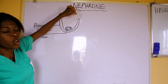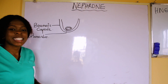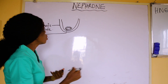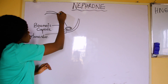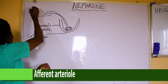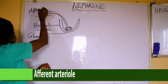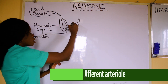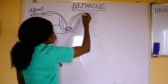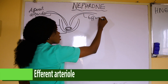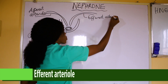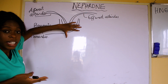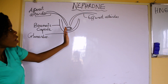Something is always coming in and going out of the nephron, and that is the arterioles. There are two types of arterioles. We have the afferent arteriole — the one coming in — and the efferent arteriole, the one going out, taking the blood out. The afferent arteriole brings blood into the Bowman's capsule for filtration so that the waste in it will go down, while the efferent arteriole takes it away.